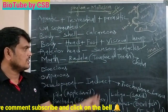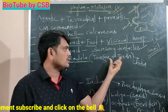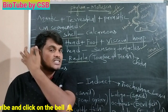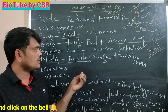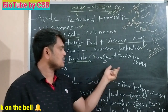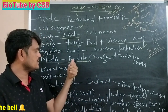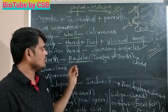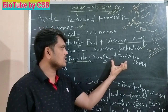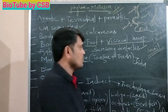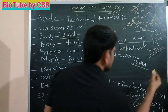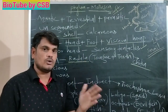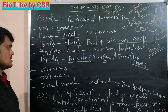A tongue with teeth is present in the snail. This structure is called the radula — it is the characteristic feature of Mollusca. Radula means tongue with teeth. It is made up of chitin. With the help of the radula, the organism can crush food.